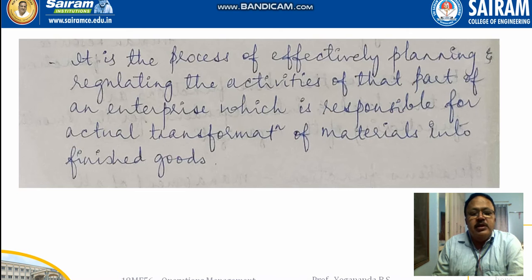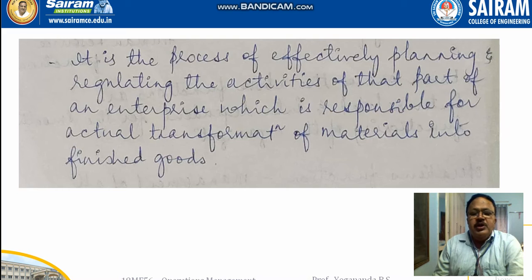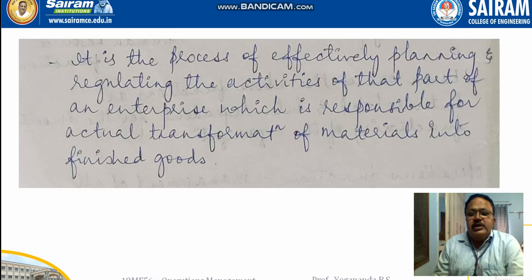Another definition: operations management is the process of effectively planning and regulating the activities of that part of the enterprise which is responsible for the actual transformation of materials into finished products. It concerns how effectively the planning is made and how that planning is executed so that the transformation of raw materials into finished goods takes place and reaches the final end user.